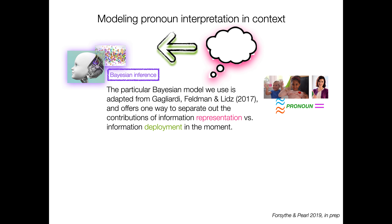The particular Bayesian model we use is adapted from Gagliardi, Feldman, and Liz of the University of Maryland. It offers one way to separate the contributions of information representation versus information deployment in the moment, which is why it's very useful for our purposes here — we're trying to understand the different contributions of these two aspects of pronoun interpretation in context.